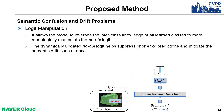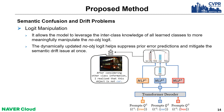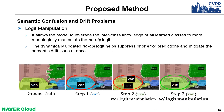For instance, as shown in the figure, the model confuses between car and bus and misclassifies the bus as a car. When applying logit manipulation, the no-object logit is updated by considering other class knowledge and suppresses the misclassified output. This is the qualitative sample for logit manipulation. Without logit manipulation, the error output at step 1 is continuously propagated forward. With logit manipulation, the previous error is correctly suppressed.